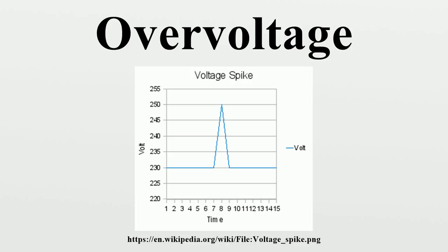The transient pulses can get into the equipment either by power or data lines, or directly through space from a strong electromagnetic field change. Electromagnetic pulse filters are used to prevent spikes entering or leaving the equipment through wires, and devices coupled electromagnetically to space are protected by shielding.